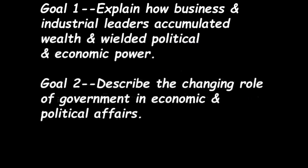All right, guys, so now we're on to our second portion of this course that relates to industrialization and migration. In particular, we're talking about 1877 to 1890. Let's talk about wealth and power during the Industrial Age. So before we talk about technologies, advancements that took place, various social issues — a broad spectrum going on in this time period — we're going to talk specifically about wealth, where the money is going, who has the money, how that money translates to political power. Our first goal is to explain how business and industrial leaders accumulated wealth and political power. Goal two is to describe the changing role of government in economics and political affairs.